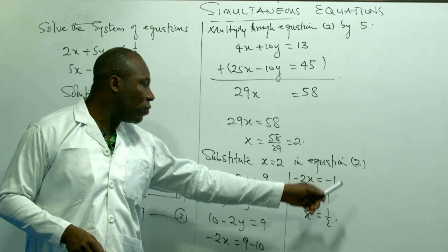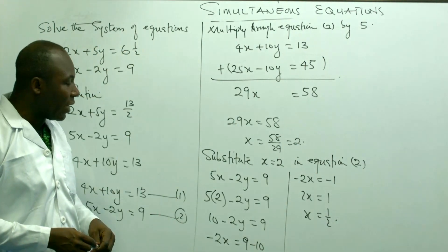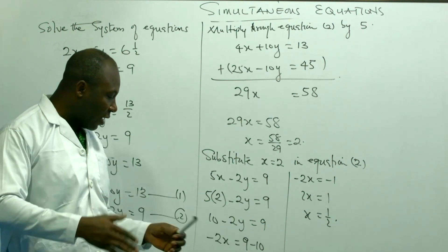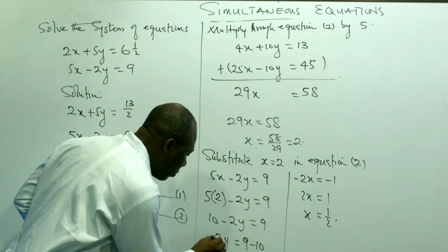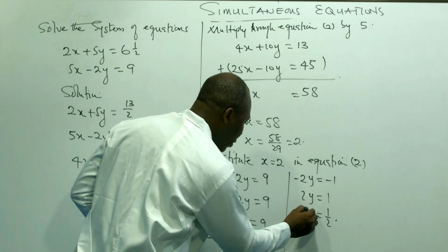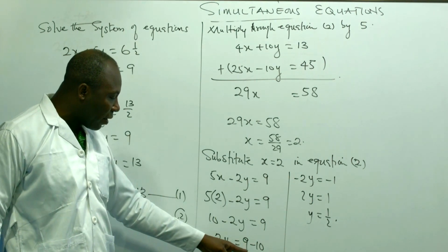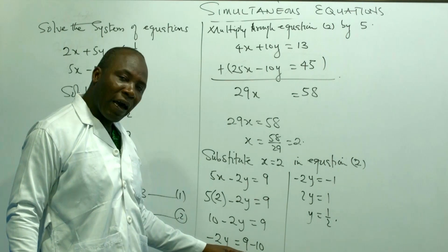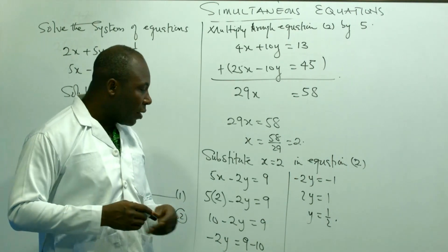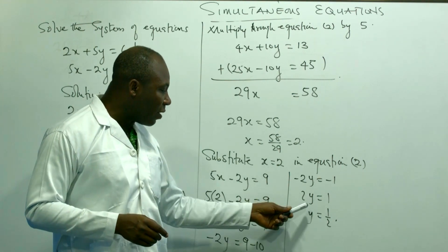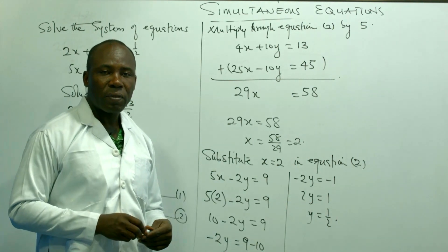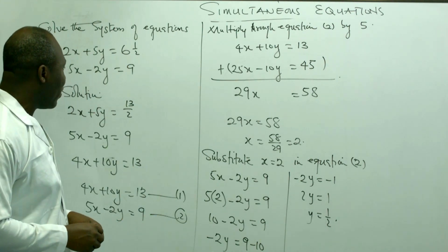Substituting x equals 2 in equation 2, which is 5x minus 2y equals 9: we put in 2, so 5 times 2 gives 10, giving us 10 minus 2y equals 9. Grouping like terms, minus 2y equals 9 minus 10, so minus 2y equals minus 1. Multiplying through by negative 1 gives 2y equals 1, then taking the multiplicative inverse of 2, which is one half, gives y equals one half.